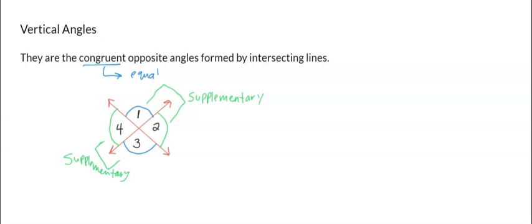So one and three is equal. Here's an example: say the measure of angle one is—actually no, let's do this way. Let's say the measure of angle two...